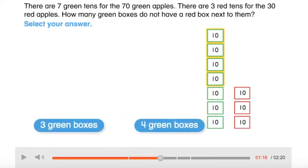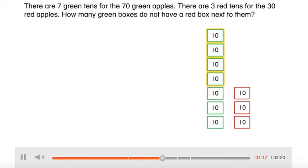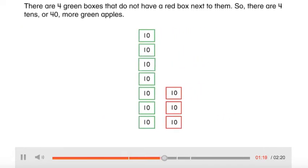Select your answer. There are four green boxes that do not have a red box next to them. So, there are four tens, or 40 more green apples.